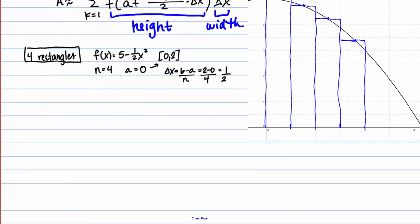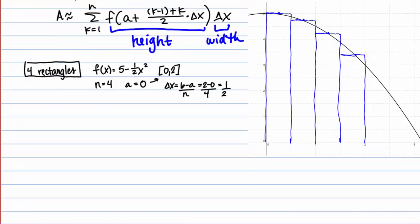Now that we have all our information, we can plug into our expression. Sum from k equals 1 to 4, f of 0 plus — we've got this k minus 1 plus k over 2, which makes sense because you can see that's a midpoint. For the purposes of calculation, I'm going to write that as 2k minus 1 over 2, times delta x which is one half, all inside the function f. Then times one half outside. That one half outside is a constant multiple, so I can pull that out front of the summation.